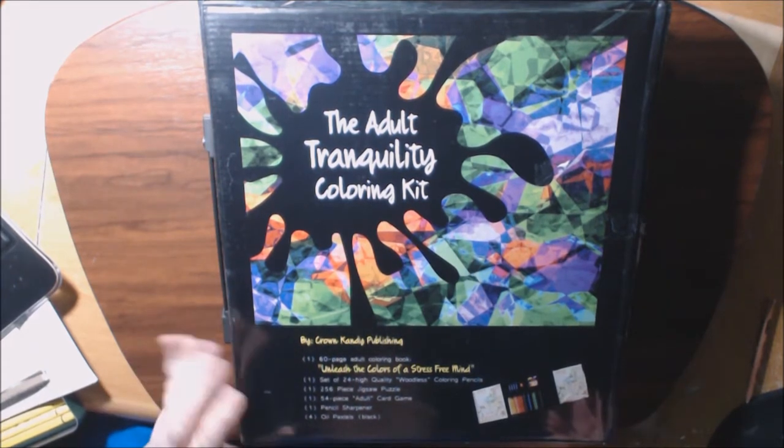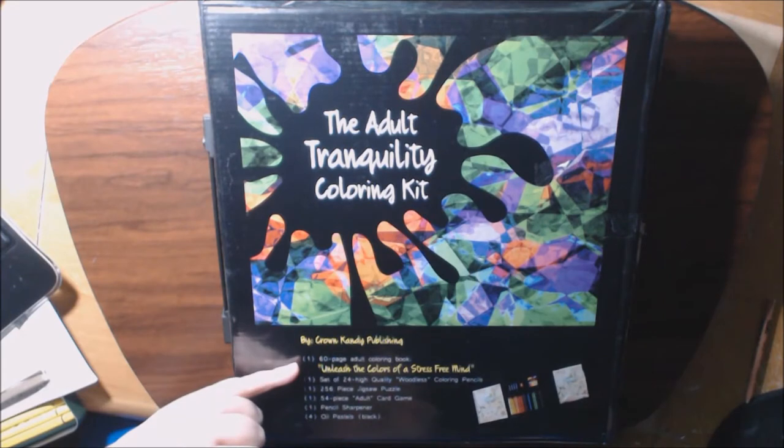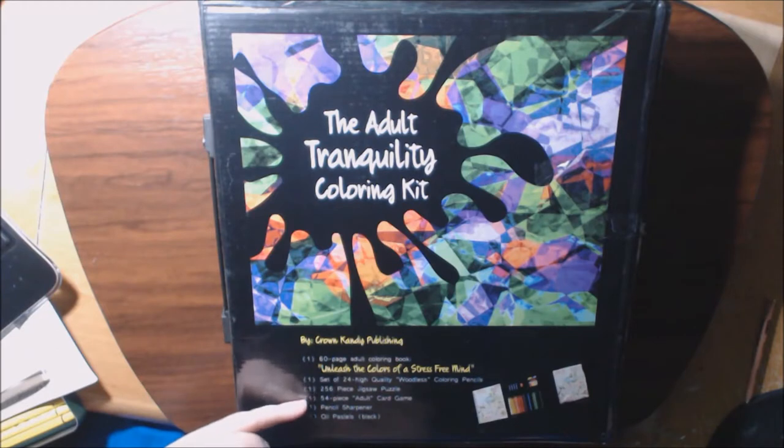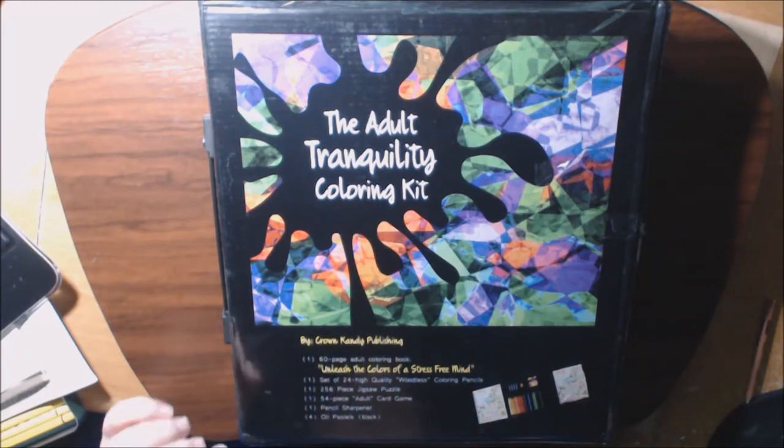It is so neat. You get a 60-page coloring book, spiral bound, and you get 24 high-quality woodless coloring pencils, a 256-piece jigsaw puzzle, 54-piece adult card game, a pencil sharpener, and four oil pastels.